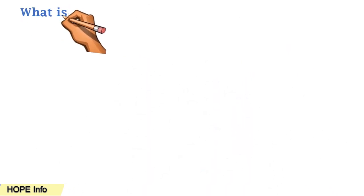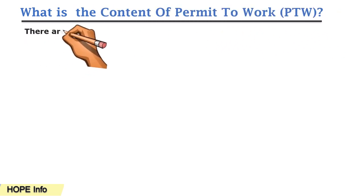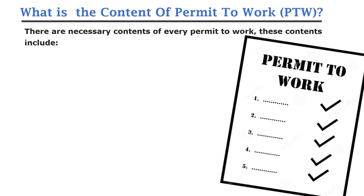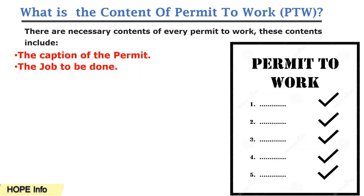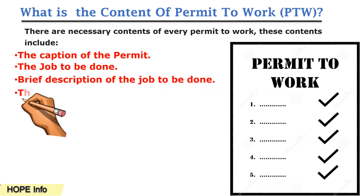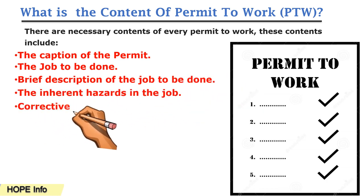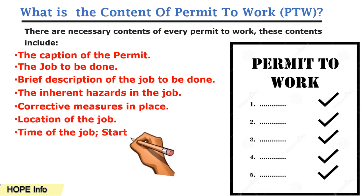What is the content of the permit to work? There are necessary contents of every permit to work, including the following steps: the caption of the permit, the jobs to be done — when you finish your duty you write down a brief description of the job — the inherent hazards in the job, corrective measures in place, and the location of the job, specifying which place you are going to be working.